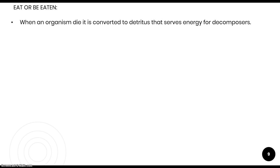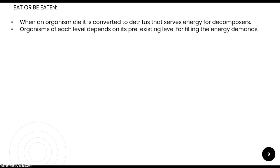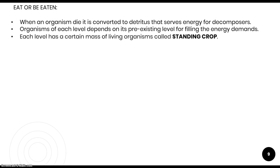When an organism dies, it is converted to detritus, which serves as energy for the decomposers. Organisms at each level depend on the pre-existing level to fulfill their energy demands. If you are a carnivore, you depend on herbivores, which in turn depend on plants. Each energy level also contains a certain mass of living organisms, known as standing crop.